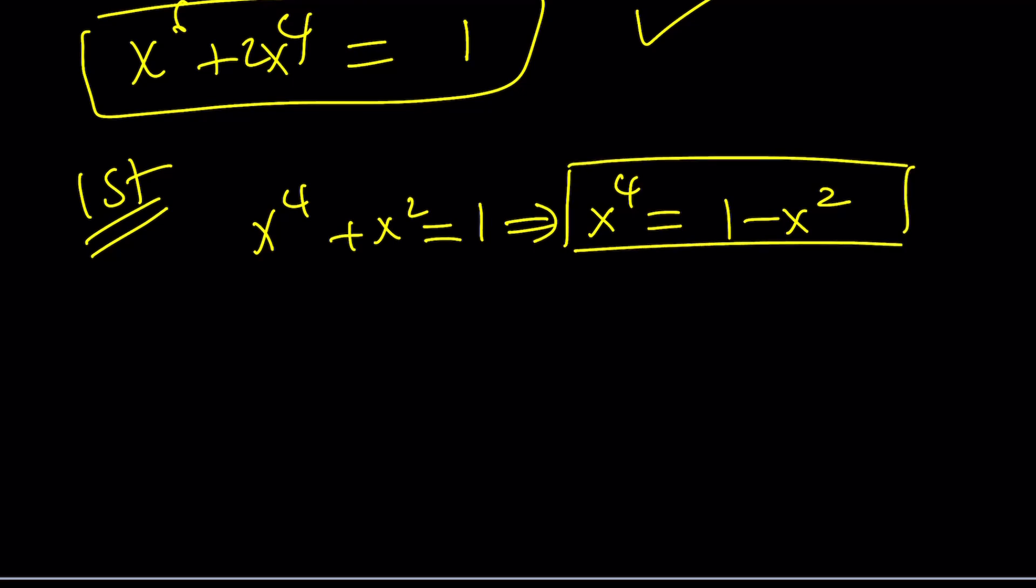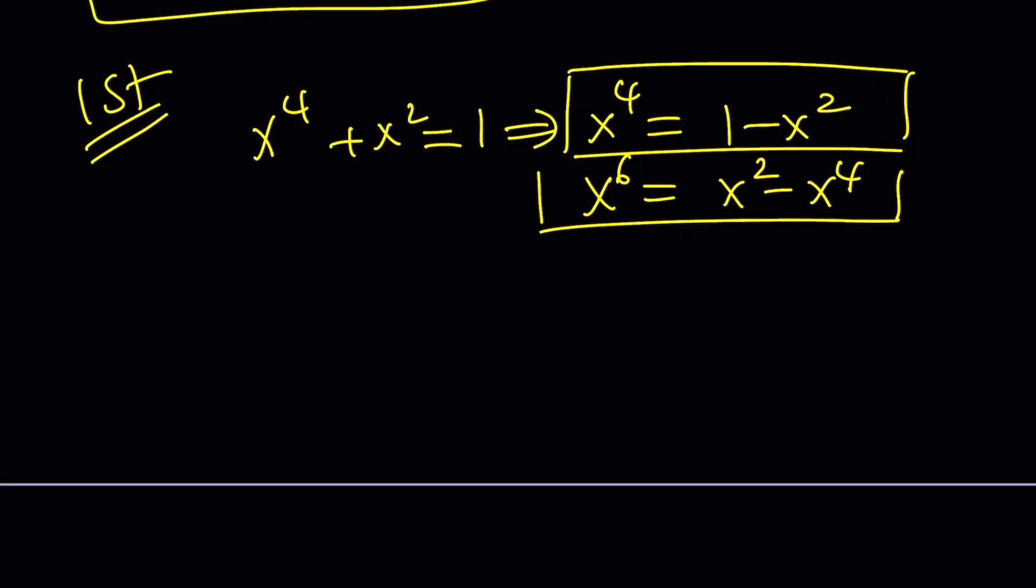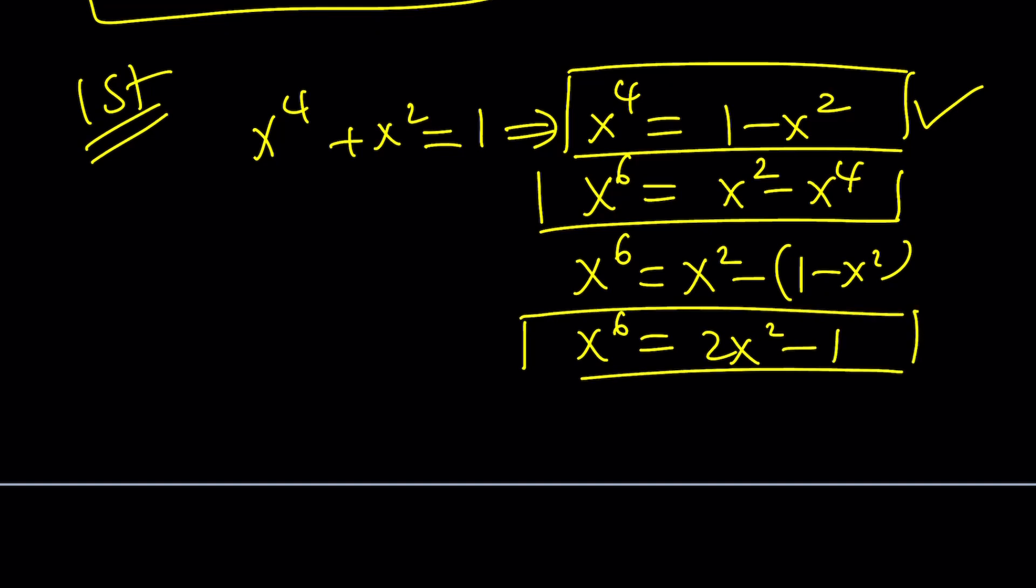Now let's go ahead and multiply both sides by x to the second power. That's going to give us x to the sixth equals x squared minus x to the fourth. So we've got another expression for x to the sixth. But remember, x to the fourth can be written as follows. So replace x to the fourth with that. And x to the sixth now can be written as 2x squared minus 1. So our goal is basically to express every power in terms of x squared. And we did because we already know this and now that.